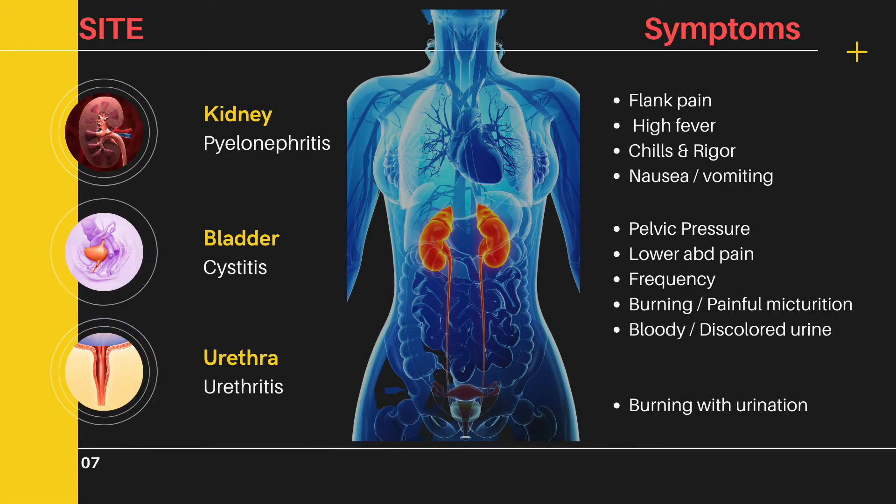When we talk about symptoms and signs, it all depends on the site of infection. If the kidneys are involved, the patient will complain of flank pain, high fever, chills and rigors, and nausea and vomiting.